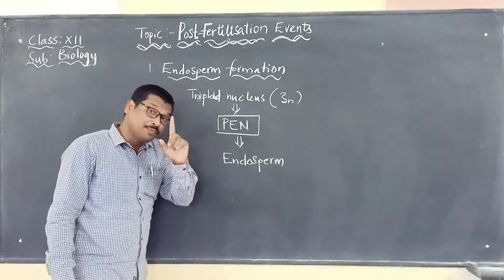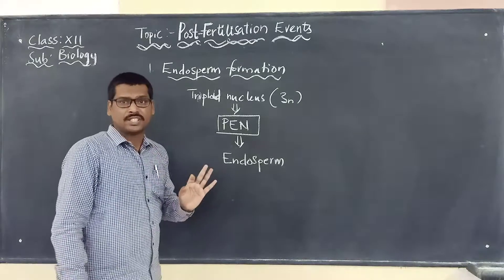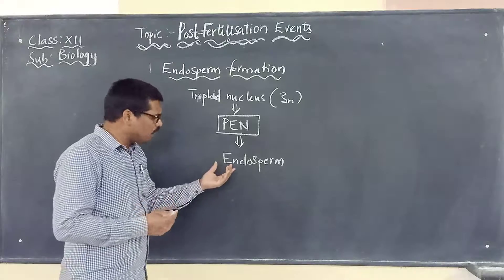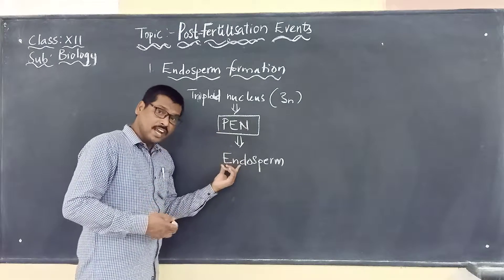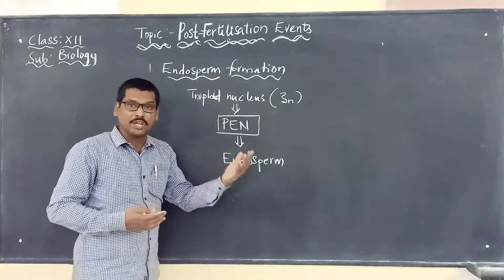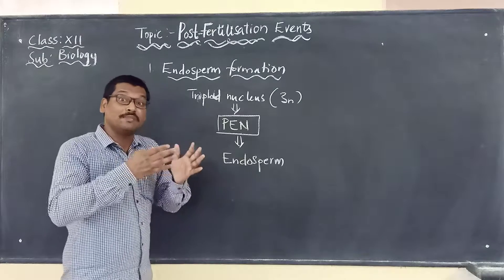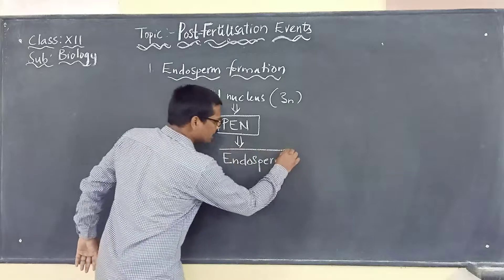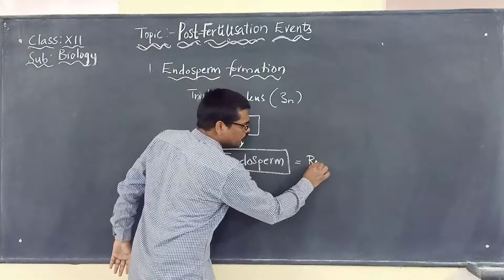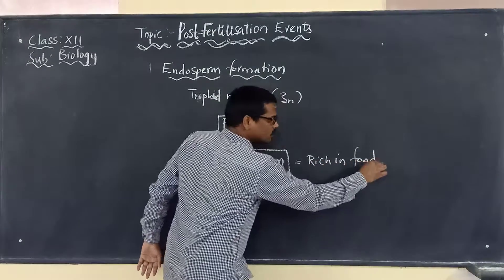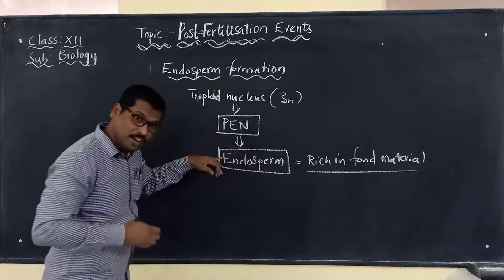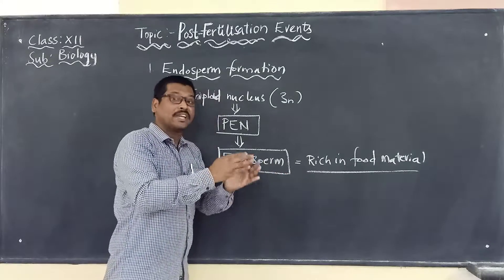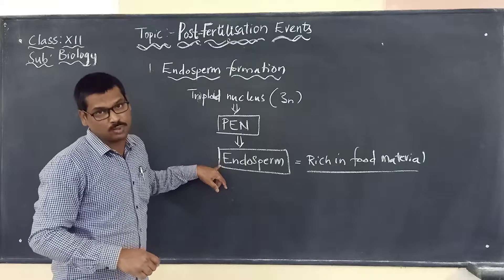This endosperm is formed prior to embryo formation — that is very important. It must be formed first because it supplies nourishment to the growing embryo and also to the seedling. Endosperm is rich in food material. It is formed before the embryo and used as nutritive material for the developing embryo as well as the seedling.